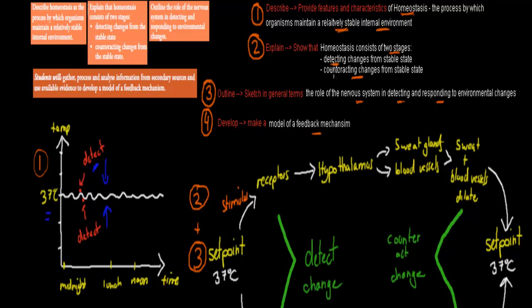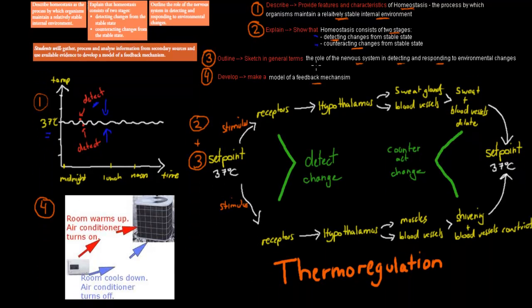The next verb was 'explain': homeostasis consists of two stages — detection and counteracting of change. If we have a stimulus such as an increase or decrease in temperature from the 37 degree set point, thermoreceptors pick up the change and signals get sent to the hypothalamus. The hypothalamus decides what to do and sends a signal to effectors, which make the response happen. If the temperature is too high, the effectors are the sweat glands and blood vessels — sweat glands produce sweat and blood vessels dilate — and both responses counteract the change, bringing temperature back to normal.